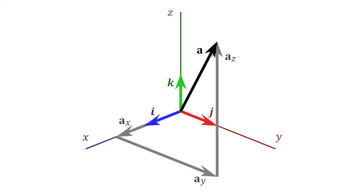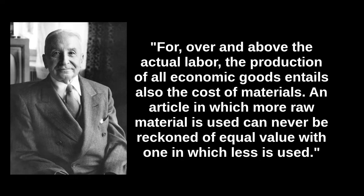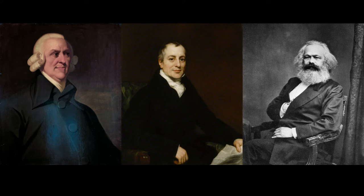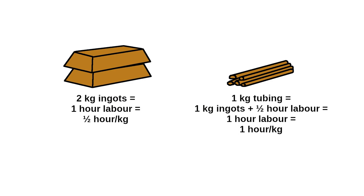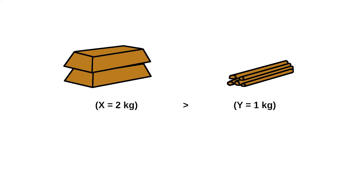Mises ends the chapter with the following quote: 'For over and above the actual labor, the production of all economic goods entails also the cost of materials. An article in which more raw material is used can never be reckoned of equal value with one in which less is used.' I wonder whether Mises had actually read any of the classical economists before writing this, since none of them suggest one can ignore the cost of raw materials. It is very easy to imagine two goods of the same value made of the same raw material where one uses more of it than the other. One example is copper ingots versus copper tubing. Ingots are easier to produce than tubing, and so have less social labor embodied per kilogram. Therefore, a mass x of ingots and y of tubing, where x is greater than y, may indeed have the same value.